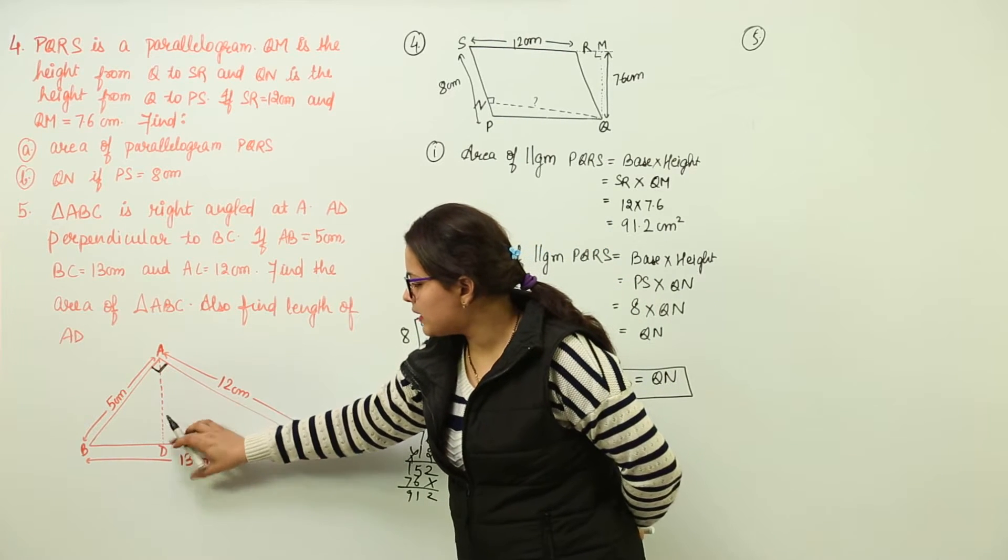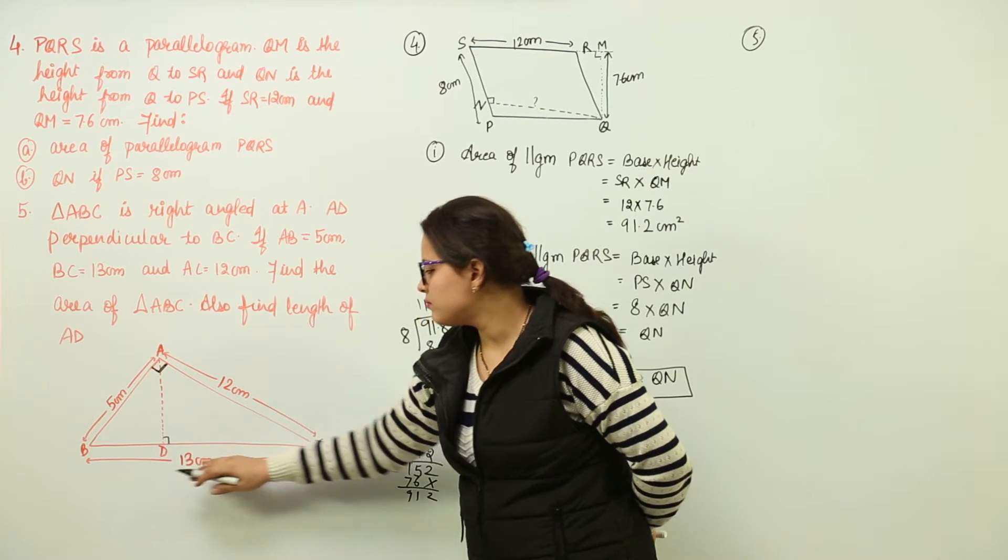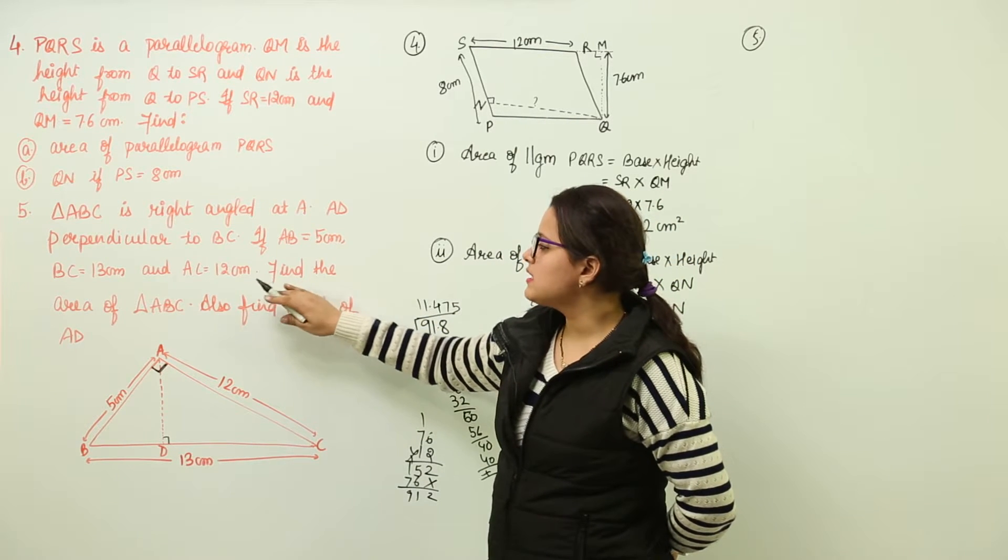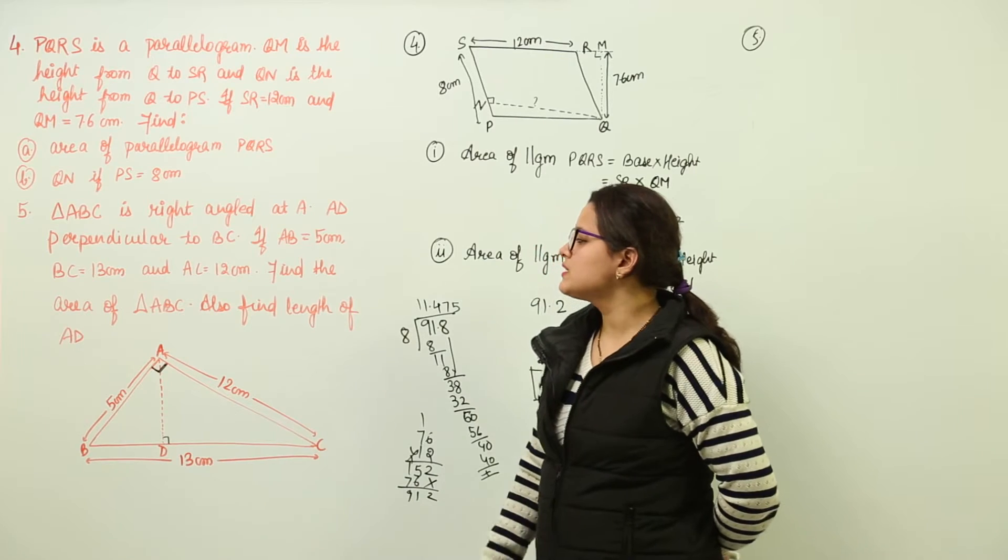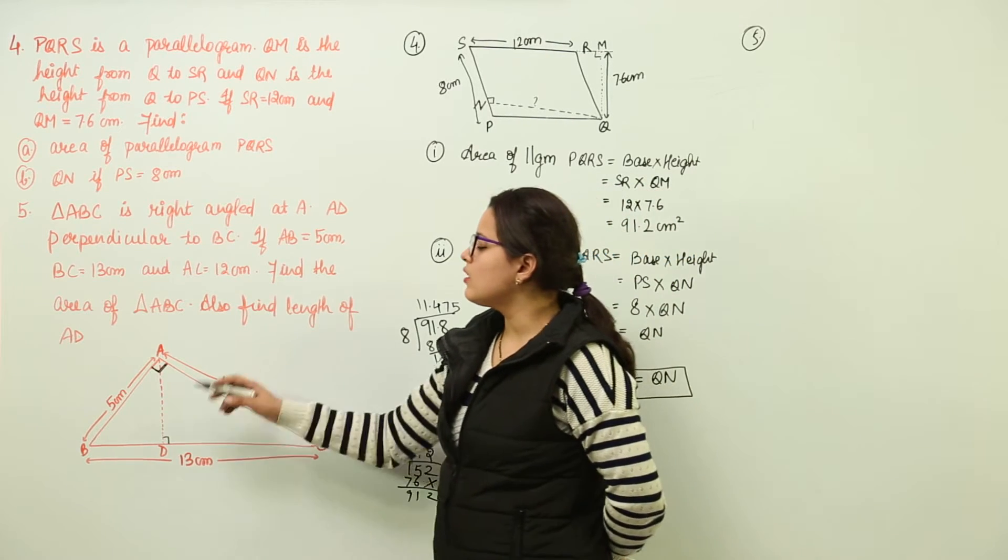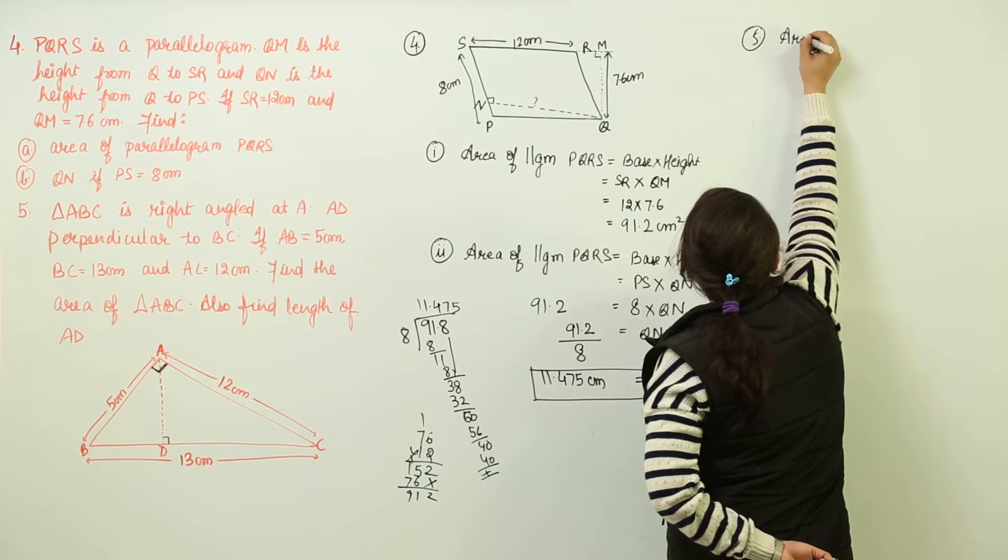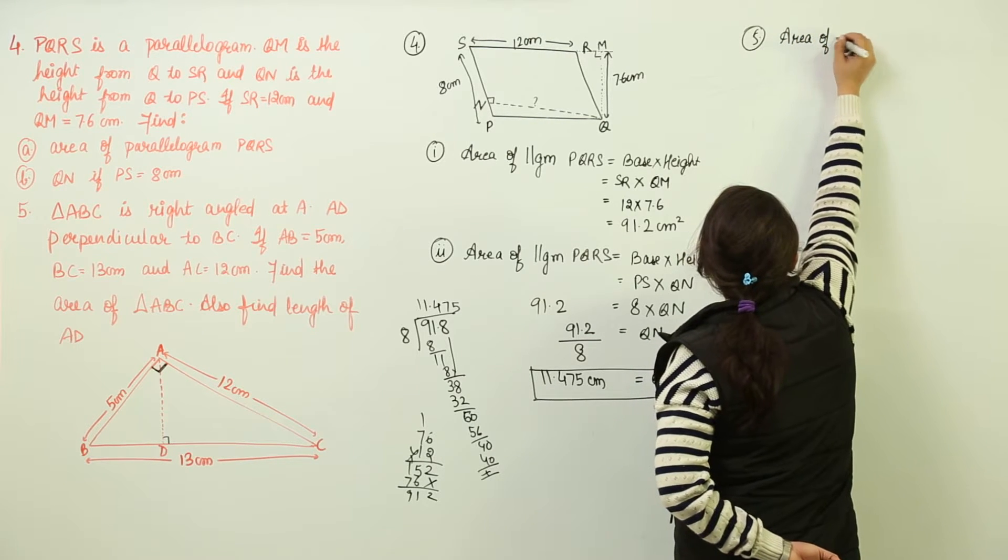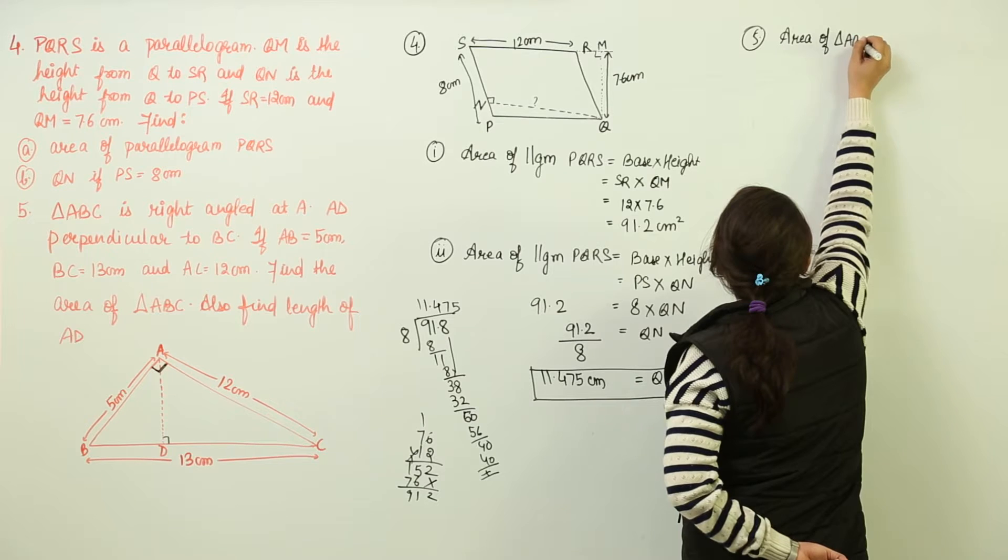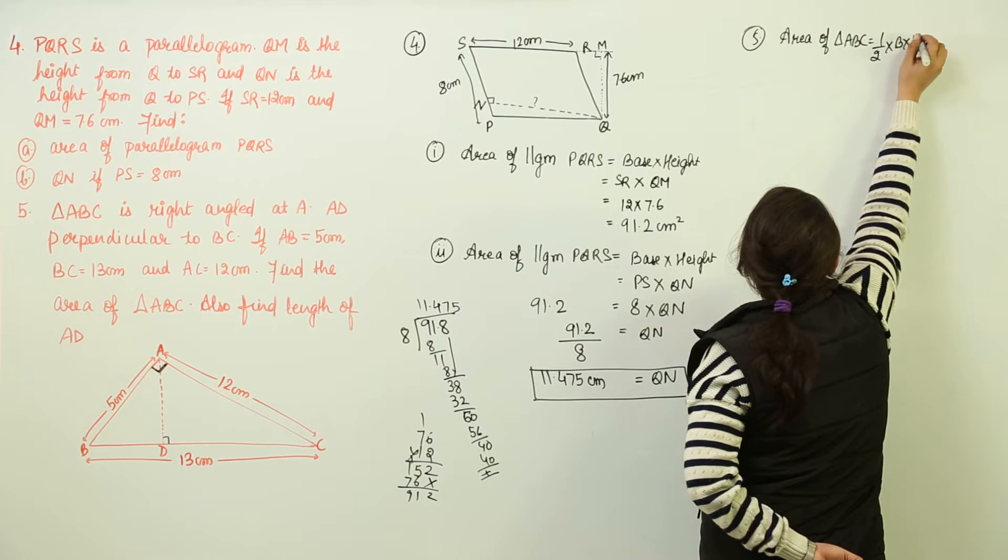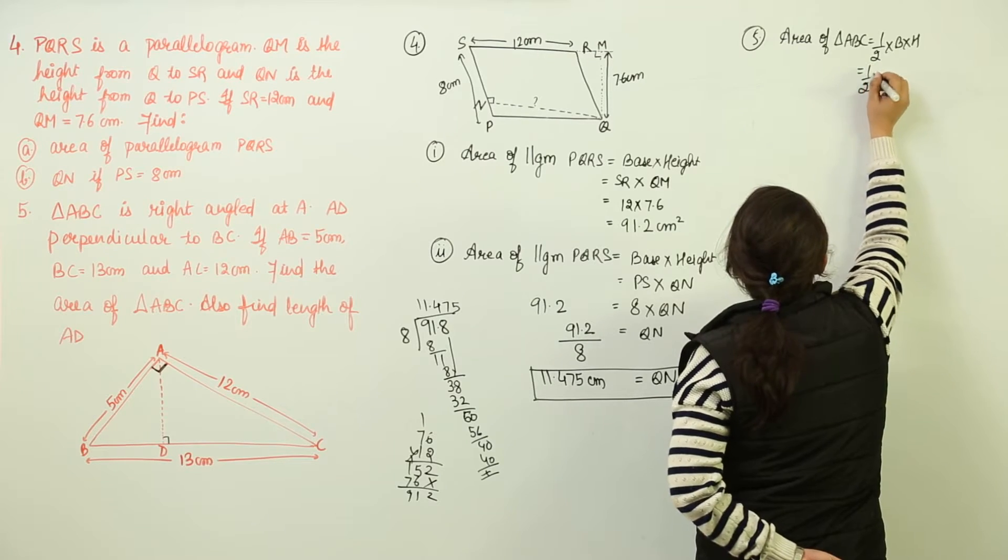We have AD perpendicular made to BC. You have AB given as 5, BC given as 13 and AC given as 12. We have to find the area of ABC. So because ABC is a triangle, we can write area of triangle ABC as 1 by 2 into base into height. Now what is going to be the base?